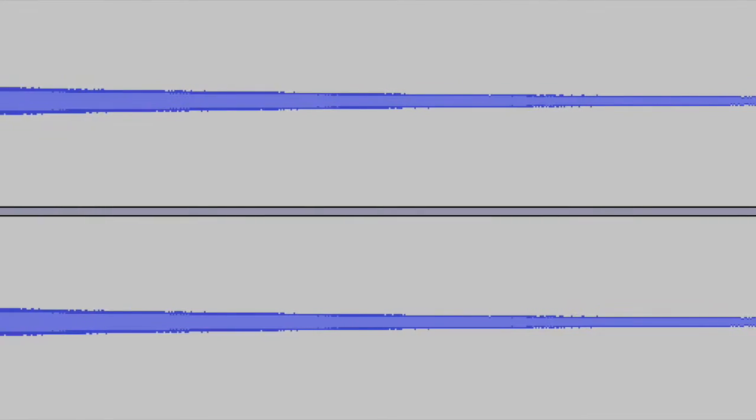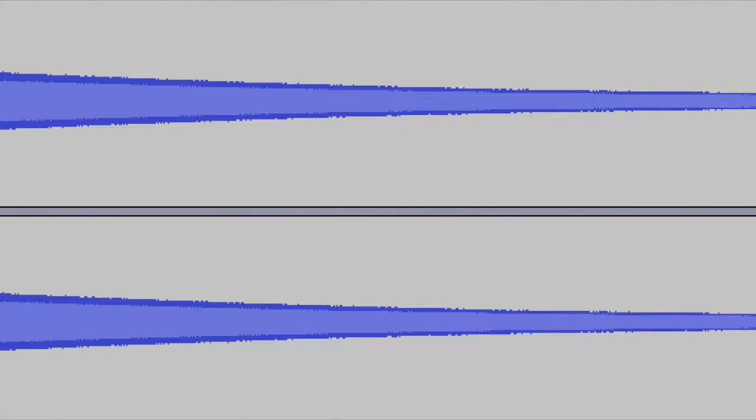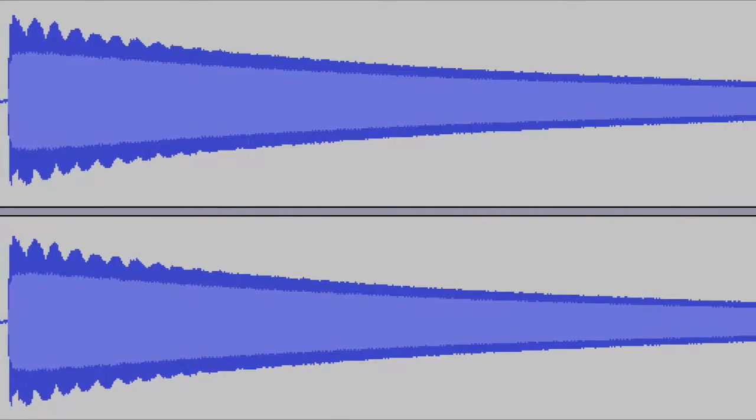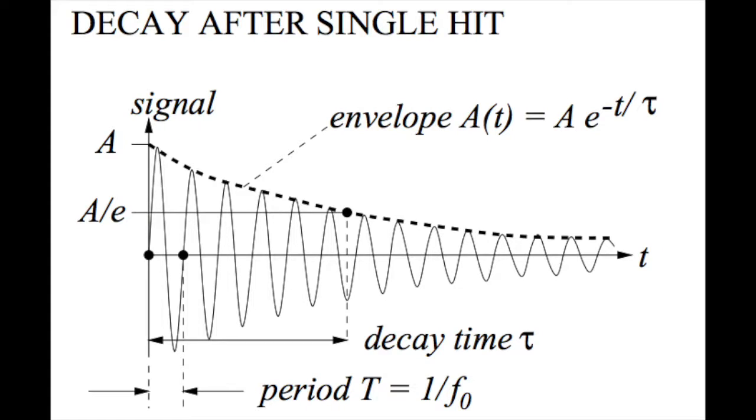Using Audacity, I was also able to determine the Q value of several vibraphone keys and determine how bar frequency related to Q value. For each key, the amplitude decays like e to the minus b over 2m times t, or e to the minus t over tau, where tau is the time it takes for the amplitude to drop about a third of its initial value.